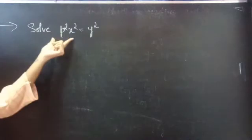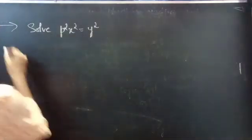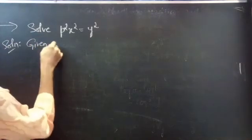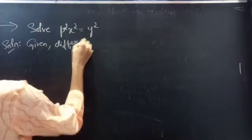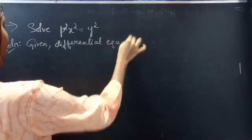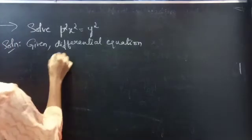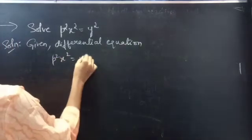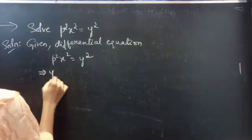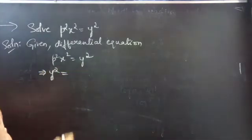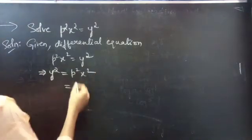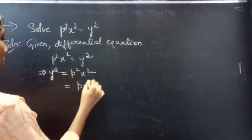Problem: solve p squared x squared equals to y squared. The given differential equation is p squared x squared equals to y squared. You can rewrite this as y squared equals to p squared x squared, and you can write p squared x squared as (px) whole squared.